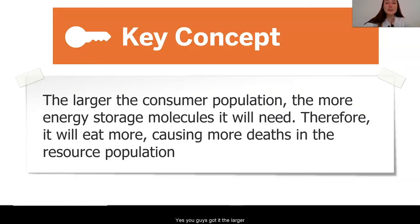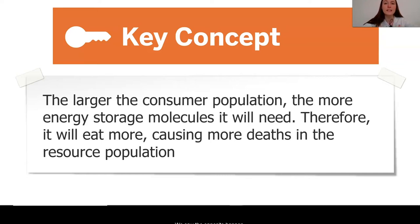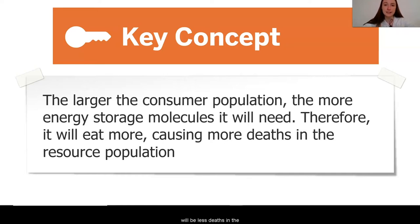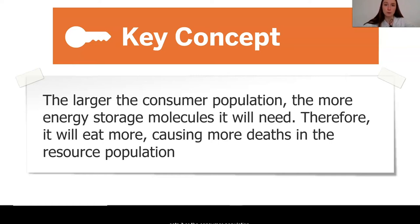The larger the consumer population — which was our Furballs in this case — the more energy storage molecules it needs. Therefore, it will eat more, causing more deaths in the resource population. We saw the opposite happen: the smaller the consumer population, the less energy storage molecules it will need, and overall that population will eat less, resulting in fewer deaths in the resource population. So there we have it — one way that we can affect the deaths occurring in a population is by manipulating the consumer population. I wonder if any of your tests also showed that we can affect the number of deaths in a population.